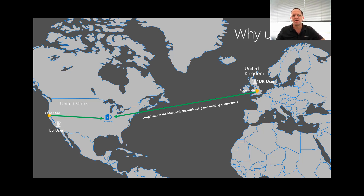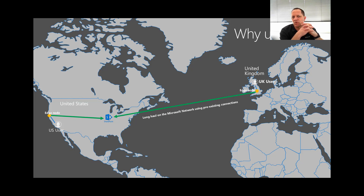So first of all, why use CDNs? Looking at the map, you'll see we have a United Kingdom location with a UK user, a United States user on the opposite side, and the SharePoint farm located in the United States within North America — around about the Chicago data center in this particular scenario. The long green lines illustrate the traffic, or the long haul, that a user would make when making requests to SharePoint Online.